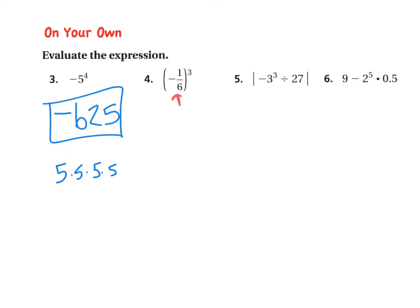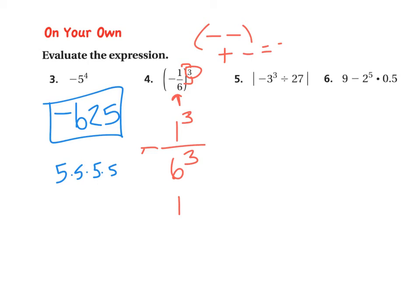Now fractions — they are a little trickier to deal with. This one includes the negative on the inside, so you will do negative times negative times negative. A negative times a negative would make it positive, but then multiplying that times a negative — a positive times a negative always equals negative. So we already know the answer is negative. When you have a fraction, this exponent of 3 applies to both numbers: it's like saying 1 to the power of 3 over 6 to the power of 3. So 1 times 1 times 1 is still 1. On the bottom, 6 times 6 is 36, times 6 is 216. So your final answer is negative 1 over 216.